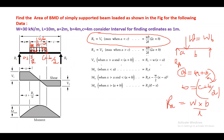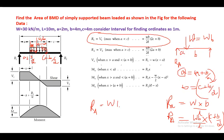So RA = WB/L. Substituting B = C + B/2, you get RA = WB × (C + B/2) / L. Simplifying by multiplying numerator and denominator by 2, RA = WB(2C + B) / (2L).